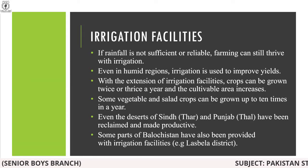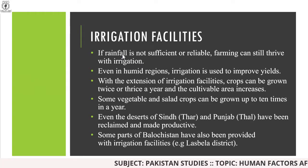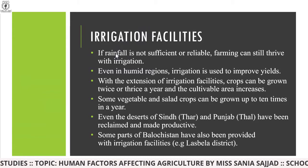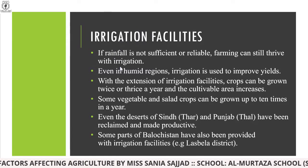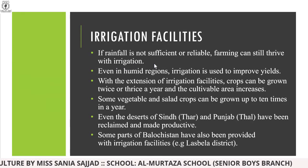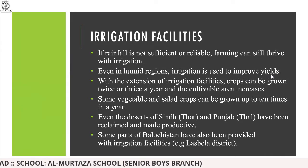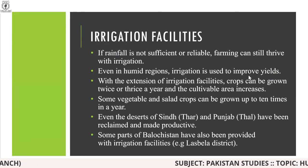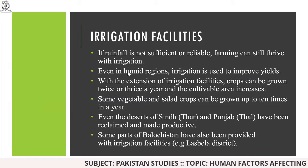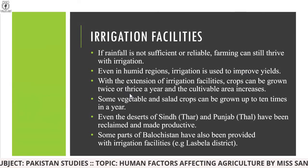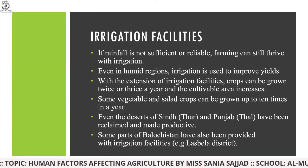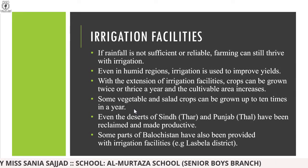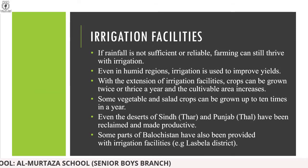For irrigation, rainfall plays a very important role. If you do not have an adequate amount of rainfall, then automatically irrigation becomes less effective and cannot improve yield. But if there is adequate rainfall, it will improve yields, and you can cultivate your land to grow crops twice or thrice a year.